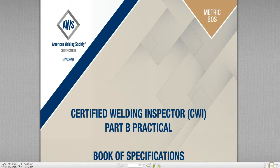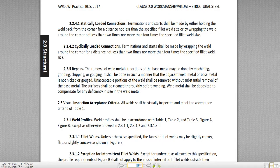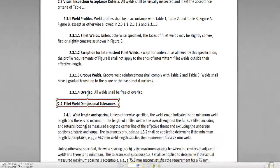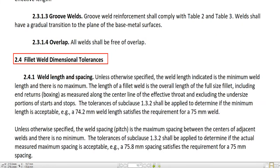Hi guys, welcome to CWI Part B Practical Book-Up Specification Lecture. This is Lecture 7. Today I'm going to talk about Chapter 2, Workmanship Requirements and Visual Inspection of Acceptance Criteria. Last time in Lecture 6, I stopped at 2.3.1.4 overlap. Today I'm going to start from 2.4, Fillet Weld Dimensional Tolerances.